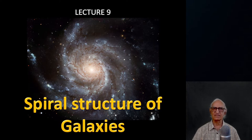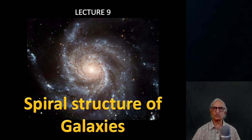Welcome. The topic of today's lecture is the spiral structure of galaxies. As we saw in the previous lecture, roughly 60% of the galaxies in the present-day universe have spiral structures. What causes these structures to arise and what maintains these structures? We shall try to understand this to some extent in this lecture.